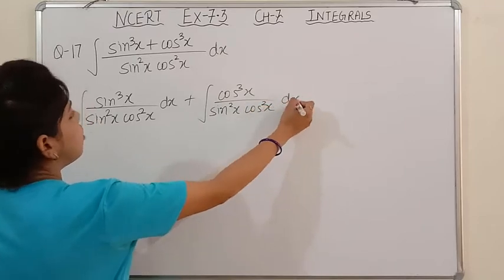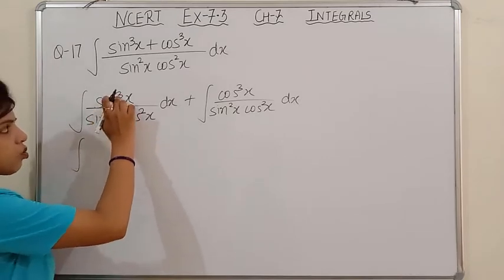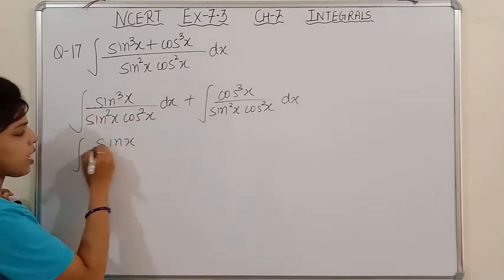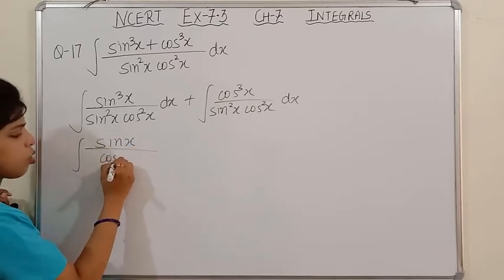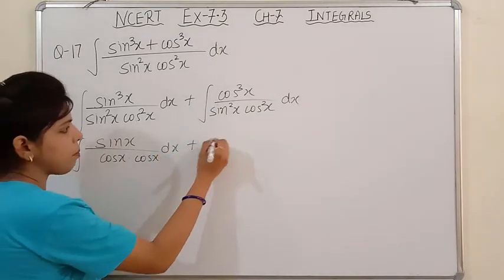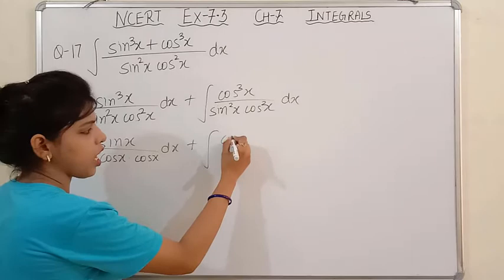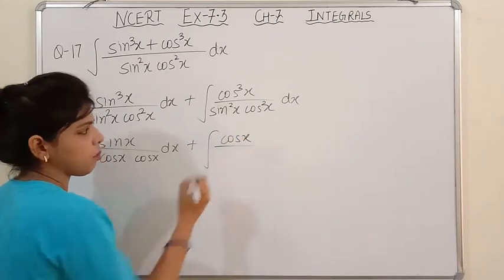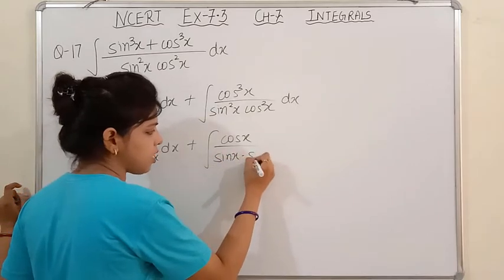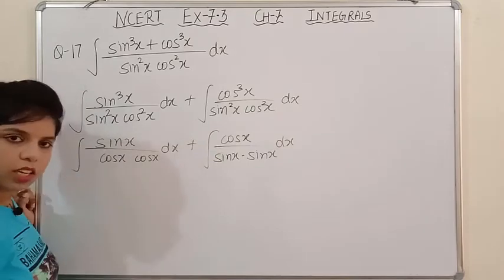By separating, sin cube x with sin square x — sin cube x will cancel, leaving one sin x in the numerator and cos²x in the denominator, which I can write as cos x · cos x. Similarly, cos²x with cos²x will cancel, leaving one cos x in the numerator and sin²x = sin x · sin x in the denominator. I hope that is clear.